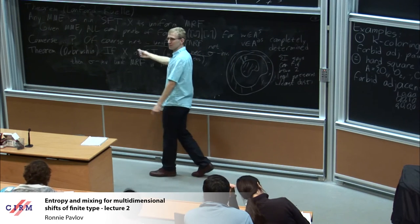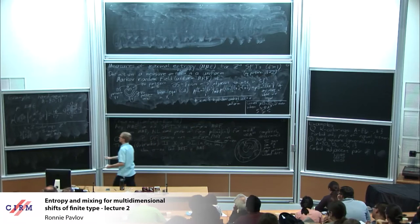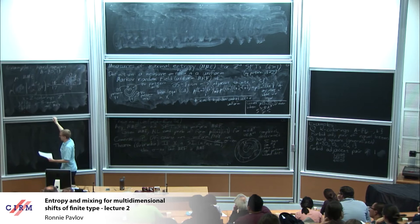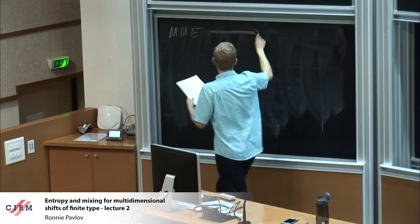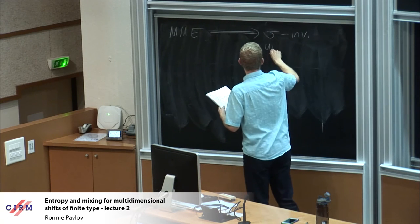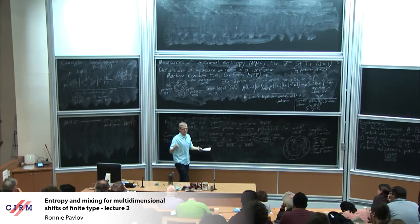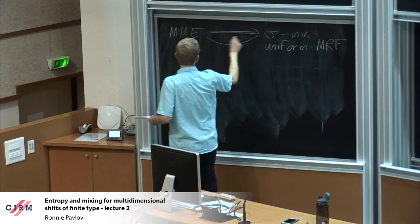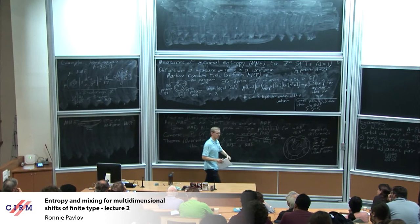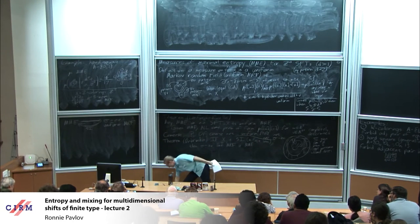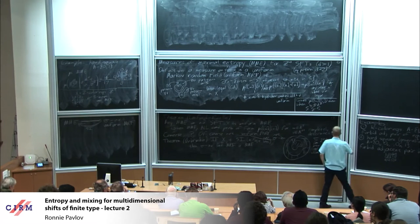For this theorem you could get away with little-o of n: if you have two shapes with diameter n and you want to fill in between them, the mixing distance could be little-o of n and this theorem would still be true. So now we have some sort of a diagram. MME implies sigma-invariant uniform MRF — that's always for the definitions I've given you today.